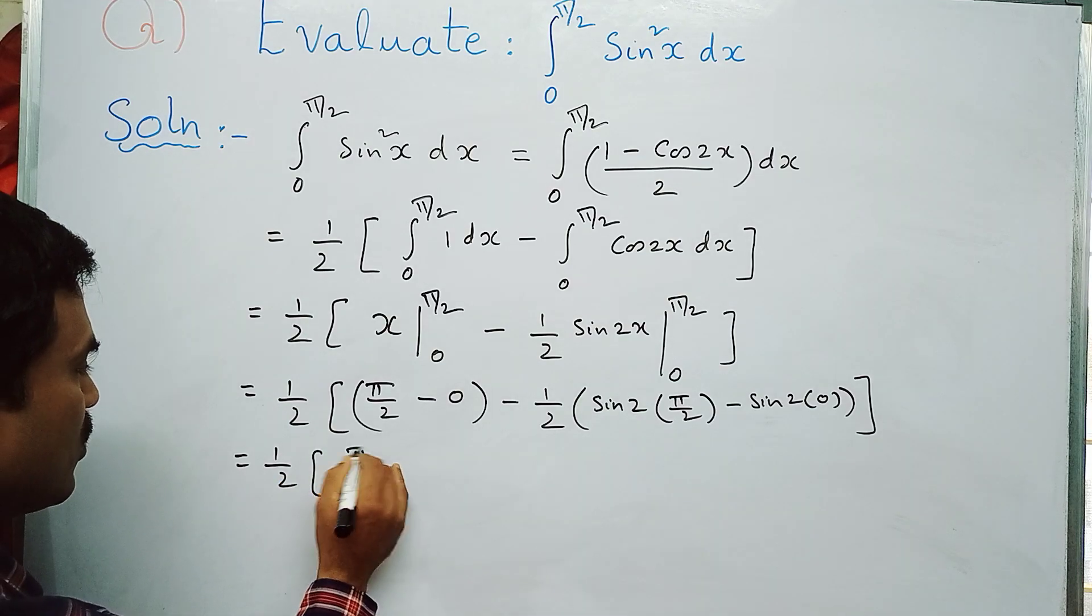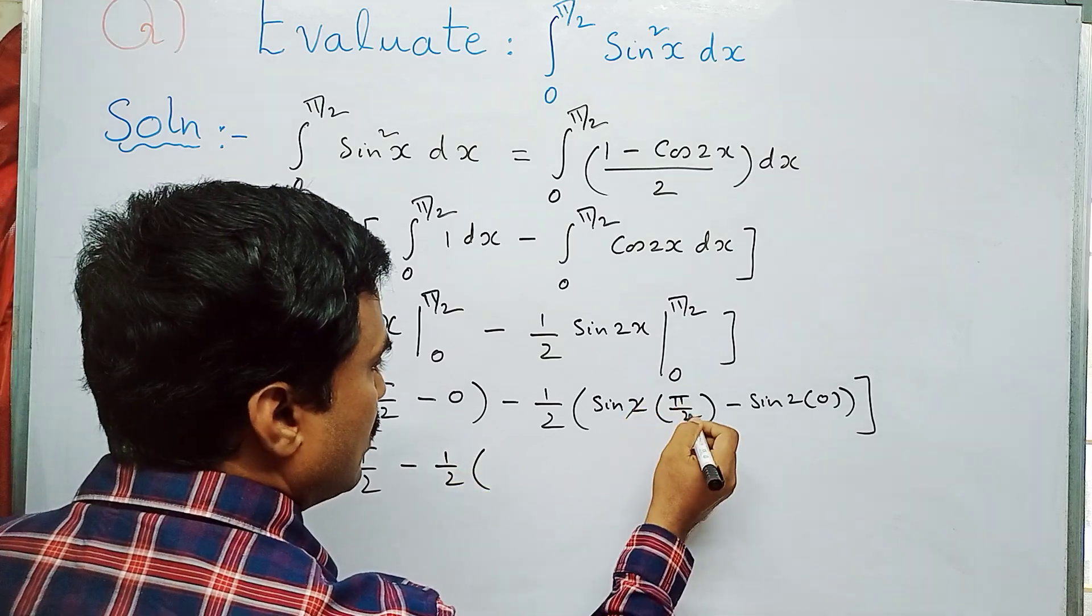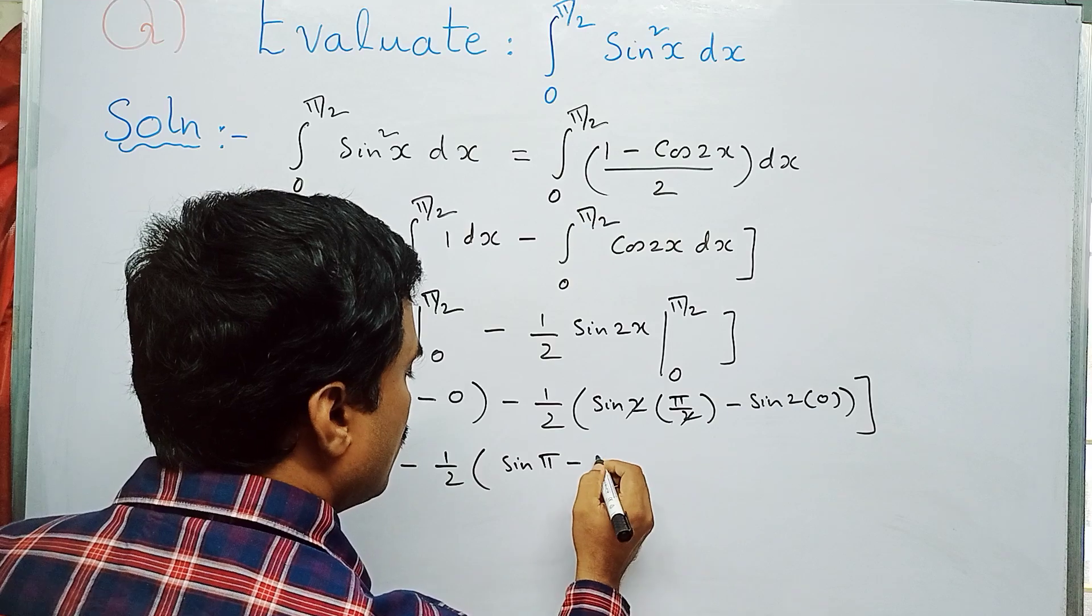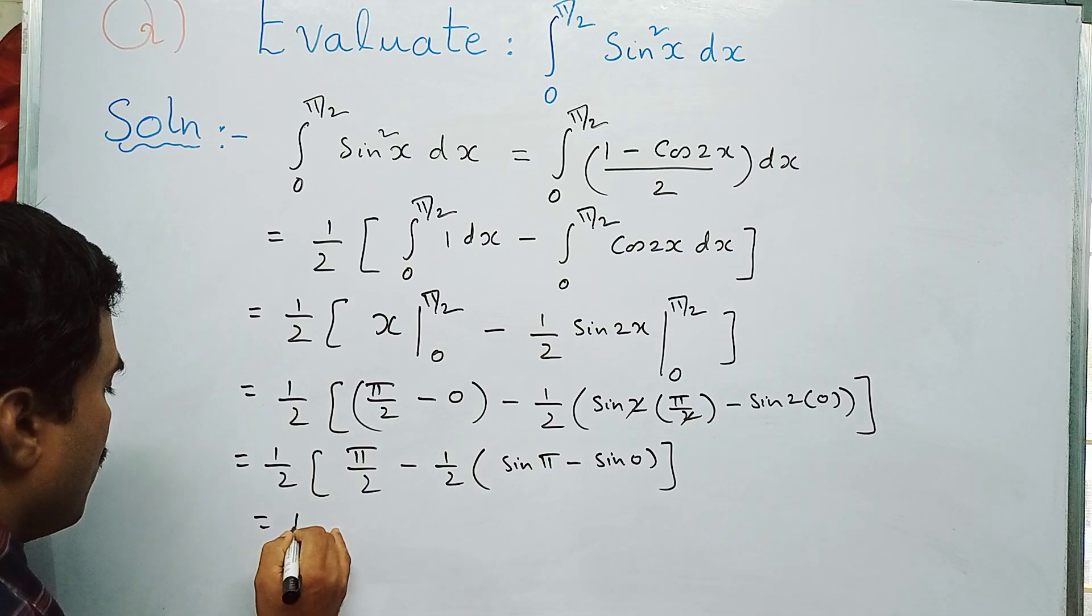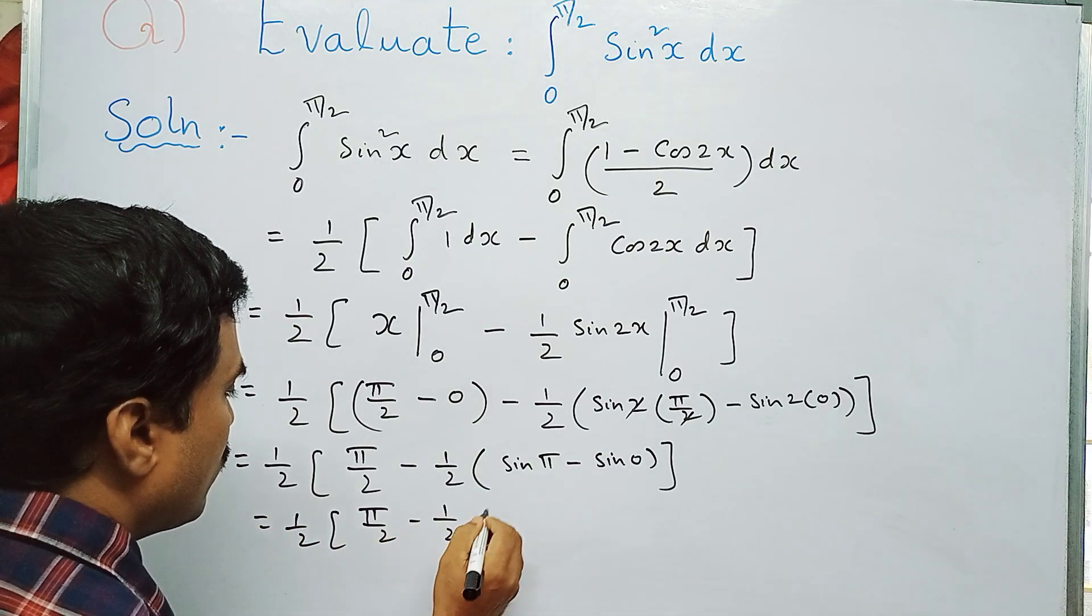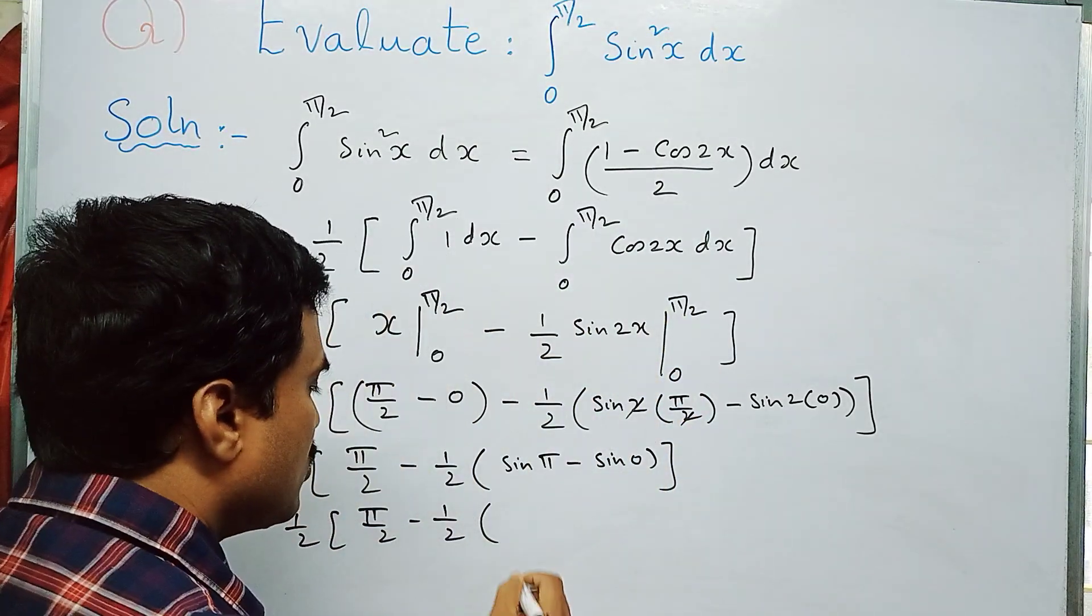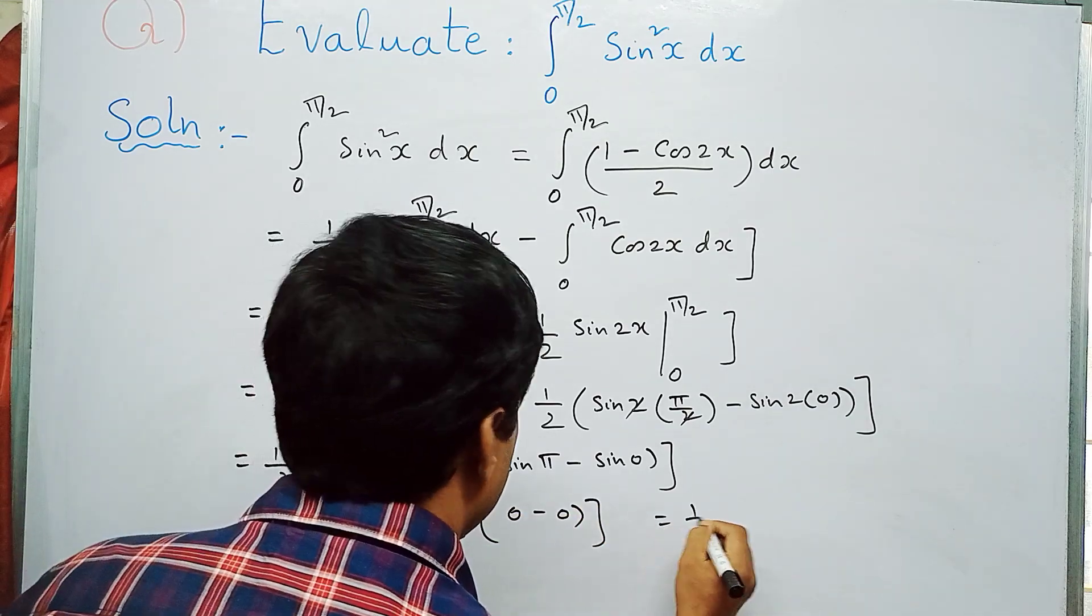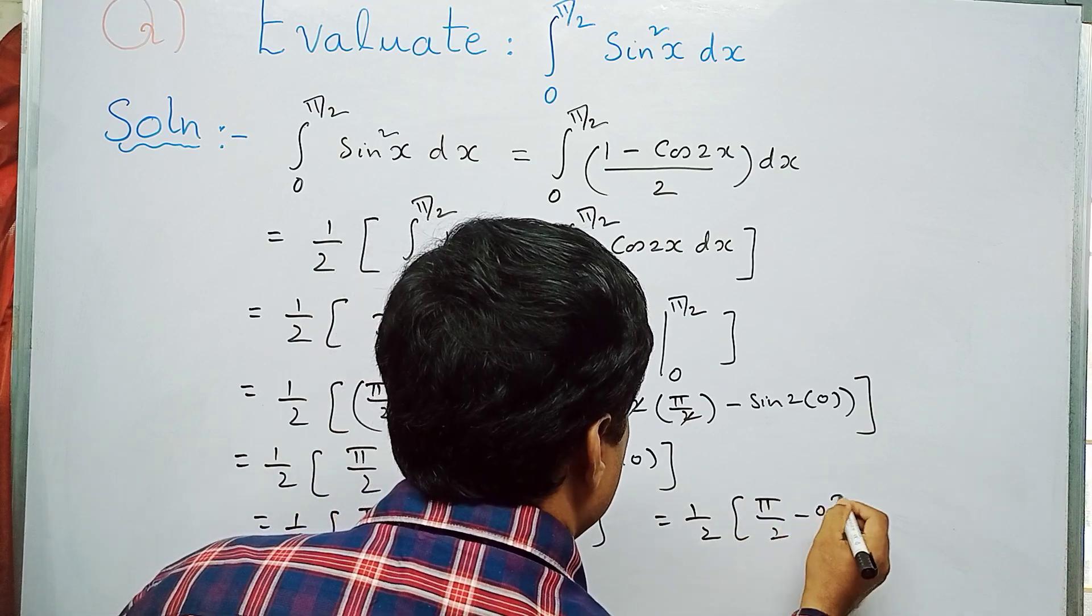Now, sinπ equals 0 (since sin(nπ) equals 0), and sin0 also equals 0. So this equals: 1/2·(π/2 - 1/2·(0 - 0)) = 1/2·π/2 = π/4. Therefore, the final solution is π/4.